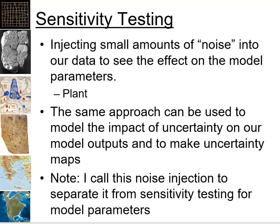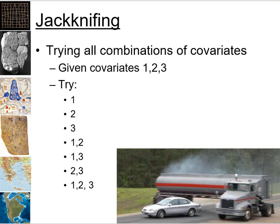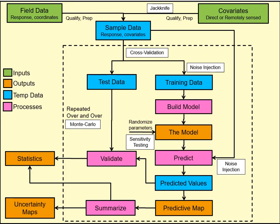Jackknifing is a simple, robust method that's useful when you're struggling with covariate selection and don't have too many covariates. It's built into MaxEnt. The approach tries every single combination of covariates — for three covariates there are seven possible combinations — builds a model for each, and then picks the best one based on performance statistics and how well it matches the natural phenomenon.